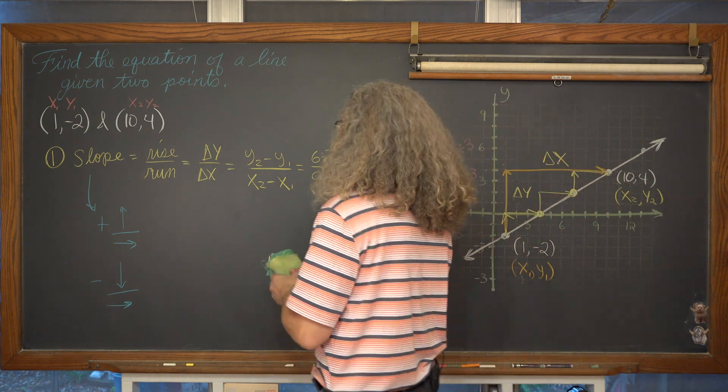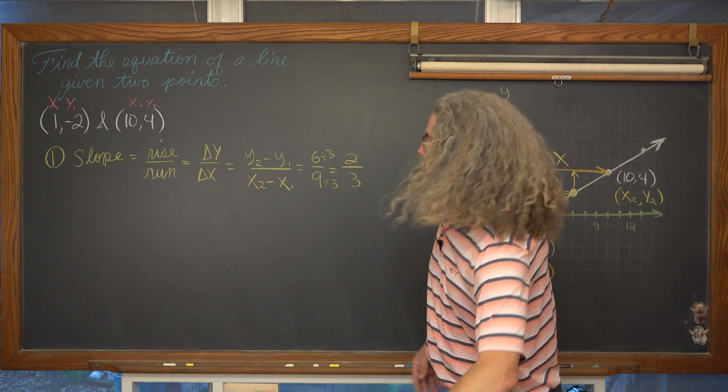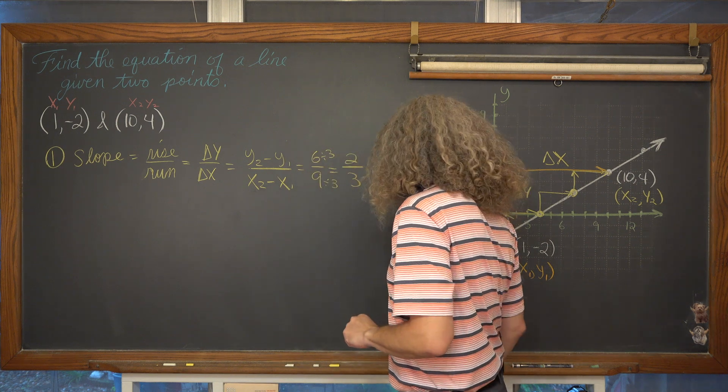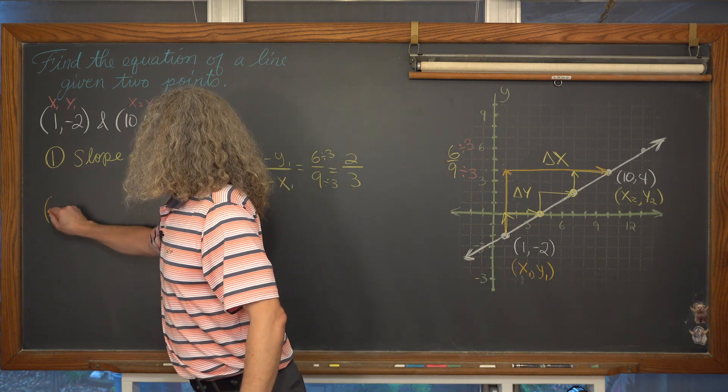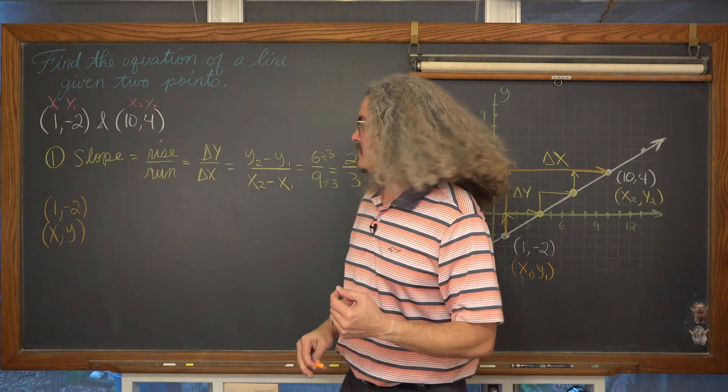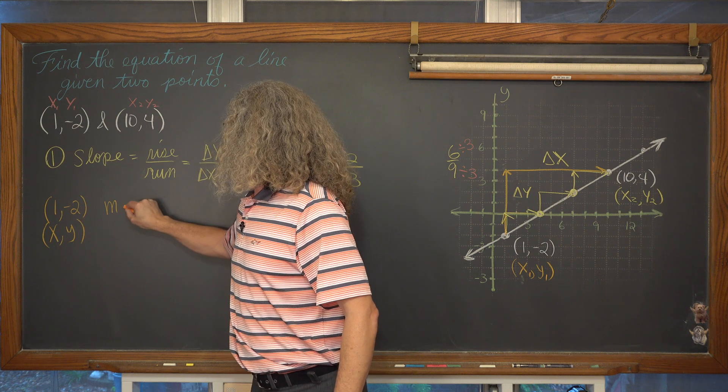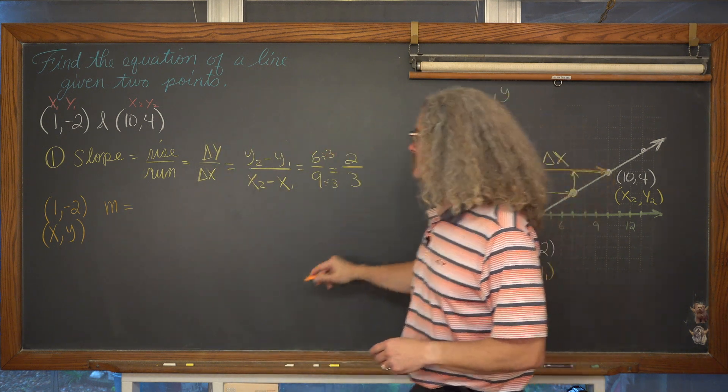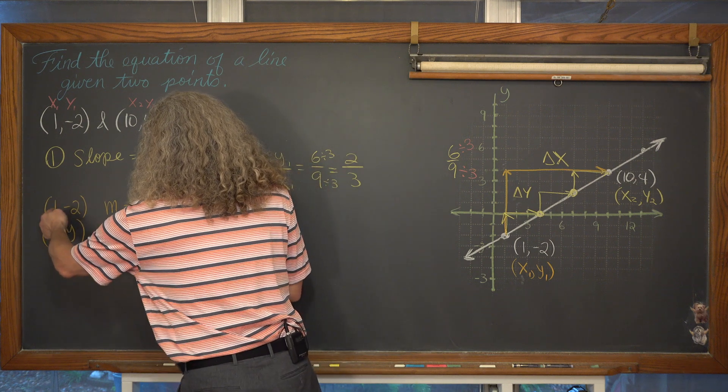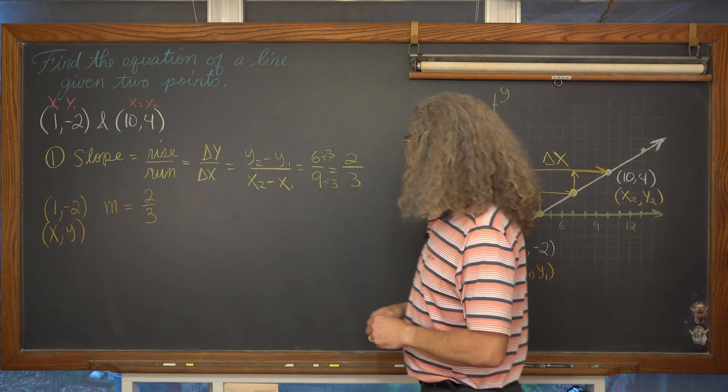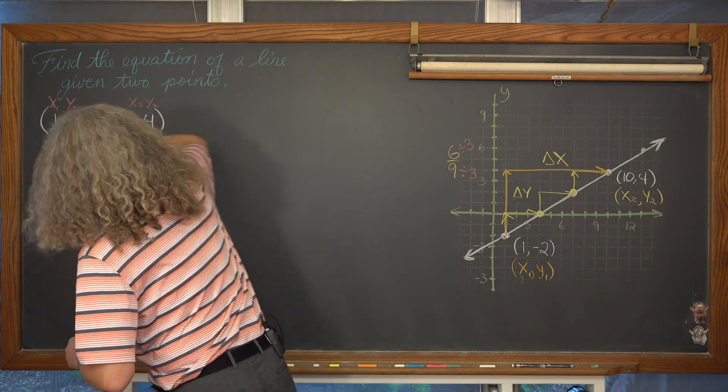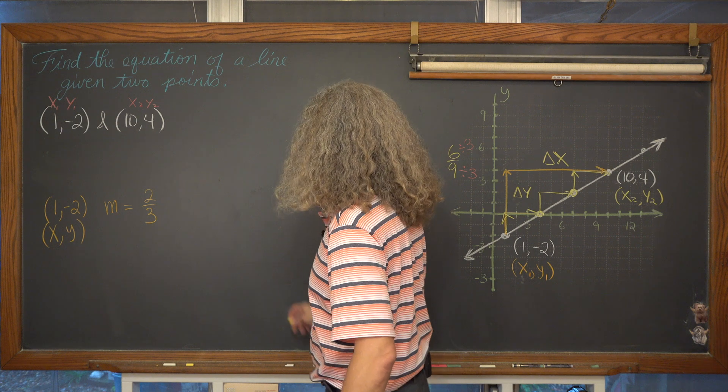So step number 2, now that we have a slope, we're just going to pick either one of these points. It doesn't make any difference. So I'm going to, for the second part of this question, pick the point of (1, -2), that's going to be the x and y that I use to write the equation of this line, along with the slope, which is, we've just found, to be equal to 2 thirds. Now, where am I going to put these numbers? Where am I going to put this value of x and this value of y and this slope?